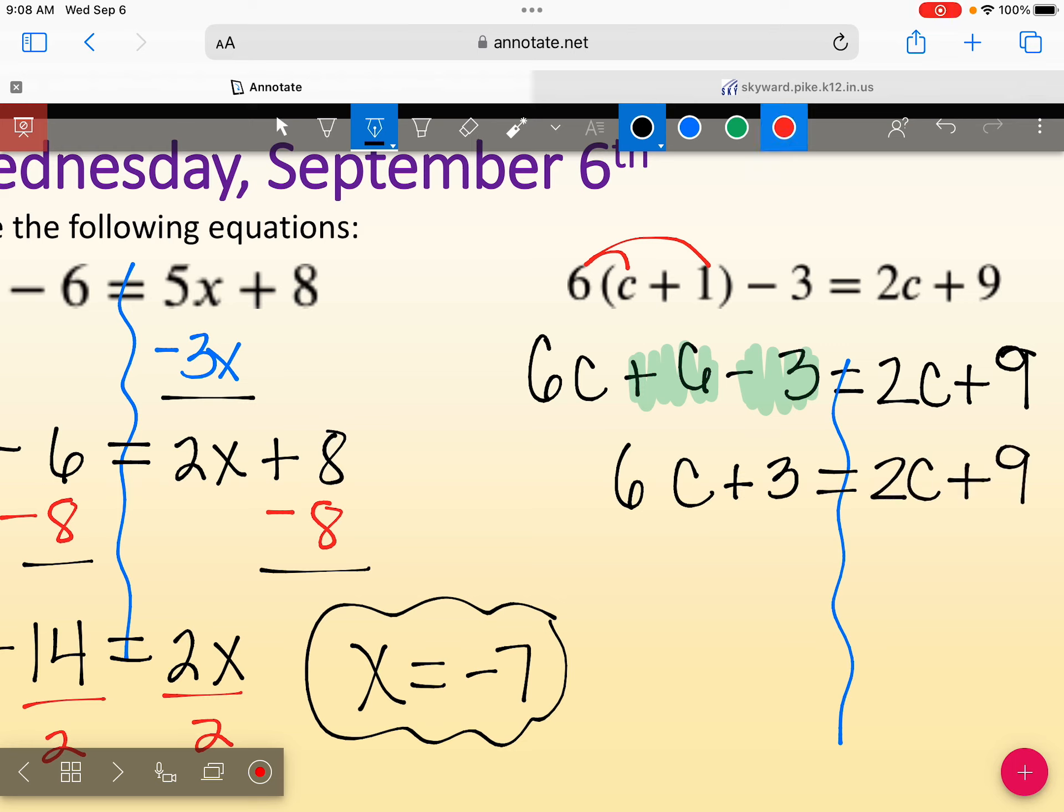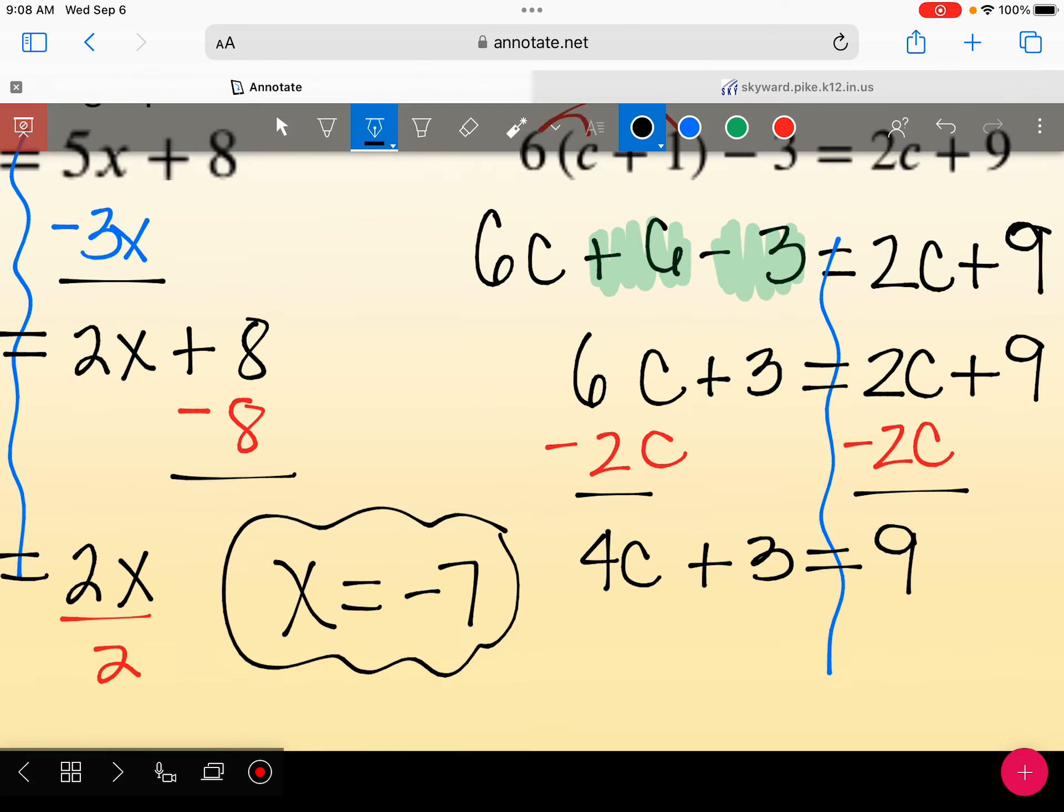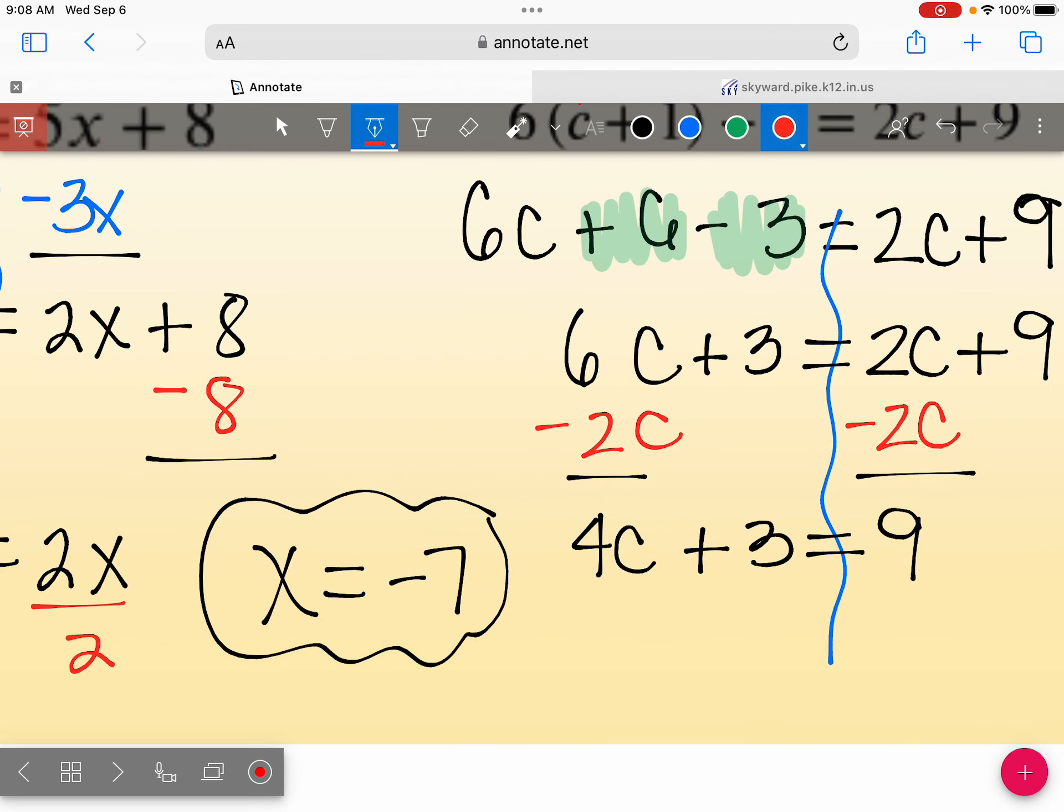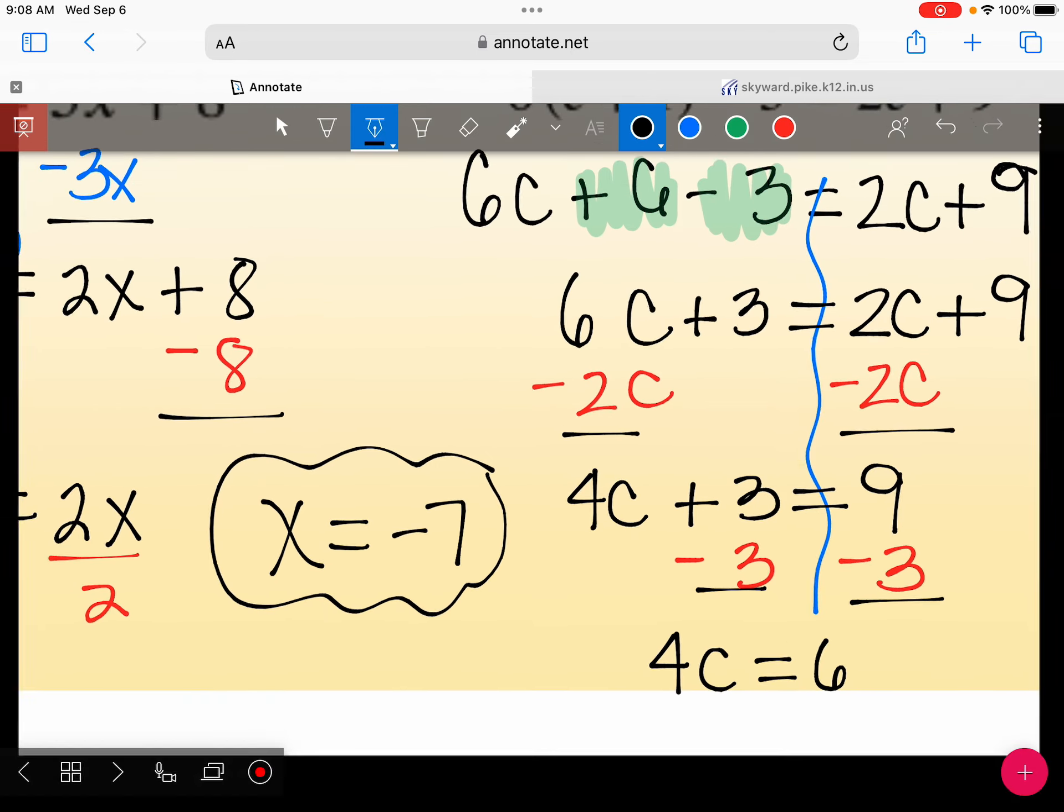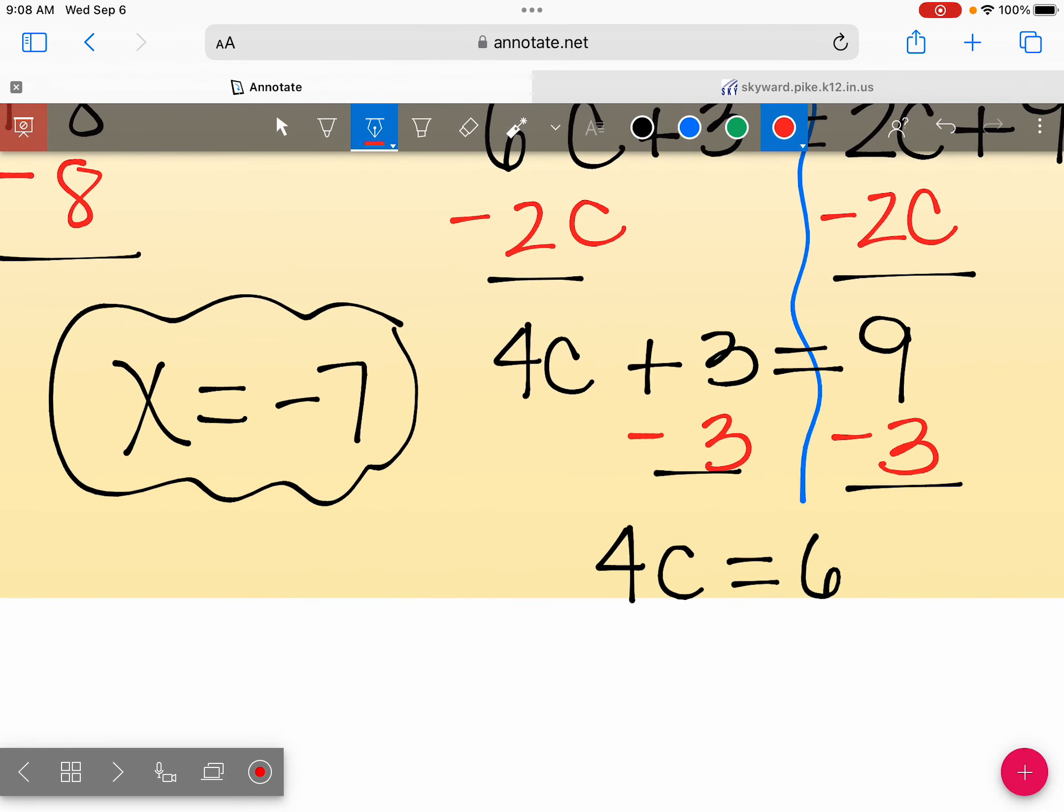Alright. Now we're going to subtract that 2c over, which gives you 4c plus 3 equals 9. And then we subtract 3. So 4c equals 6. So there's actually three answers that you could give me and get full credit. So I would give you full credit if you left it as 6 over 4, if you reduce that and said 3 over 2, that's also correct. And if you wrote that as a decimal, 1.5, that would also be correct.